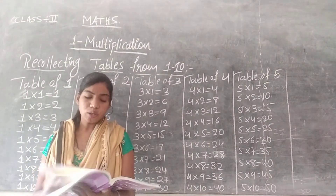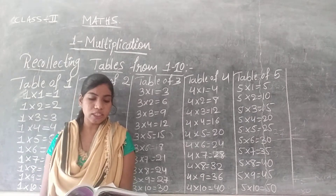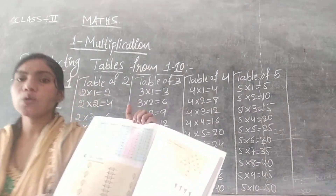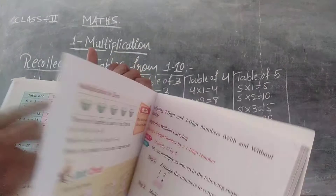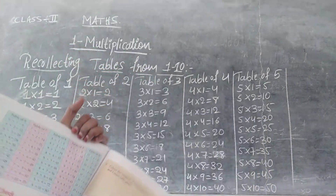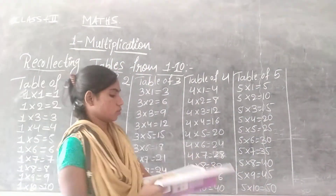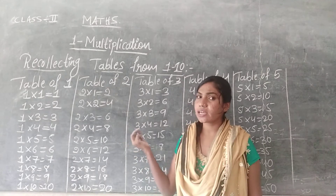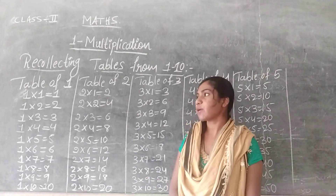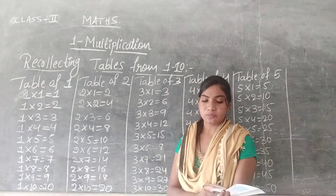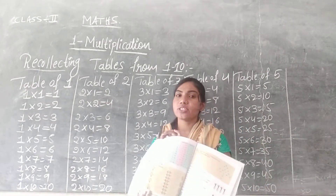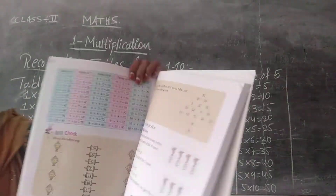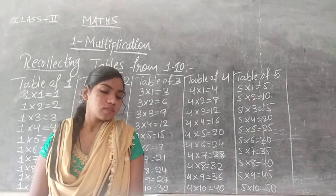Now open your page number 162. In page number 162 you have the tables of 6, 7, 8, 9 and 10 — that is, the table from 6 to 10. So read that table.